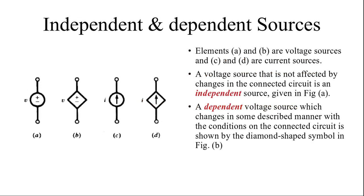We also have independent and dependent sources. There are two types of sources: one is independent and the other is dependent. An independent source is a source which is not affected by the changes in the connected circuit. A dependent source changes in some discrete manner — for example, if you make changes in the current source, then the voltage will also change. In this case, this voltage source is called a dependent source.